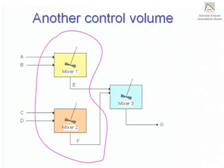Another option would be to isolate two other mixers. In this case, we will only be taking into account streams A, B, C, D, E and F.